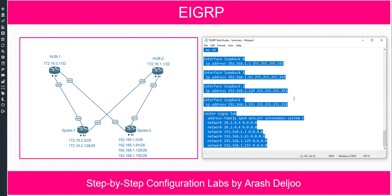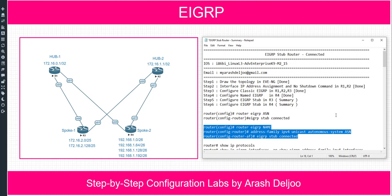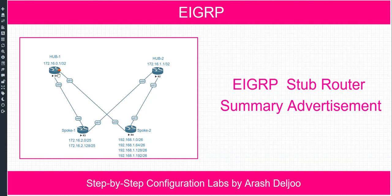The command is similar to the previous video. The command is 'eigrp stub' then 'connected'. This applies in both the classic configuration of EIGRP and also in the named mode configuration of EIGRP, where we use 'eigrp stub connected' under the address family IPv4 unicast autonomous system.